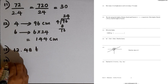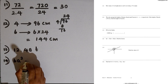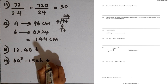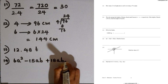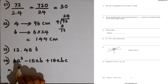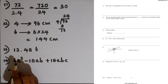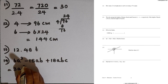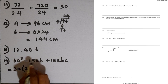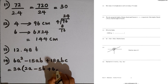Question number 14: we are given 6a squared minus 15ab plus 18abc. We can take common factors out. 3 is common, and a is also common as it appears in all three terms. So we take 3a out. Dividing each term by 3a gives: 3a times (2a minus 5b plus 6bc).